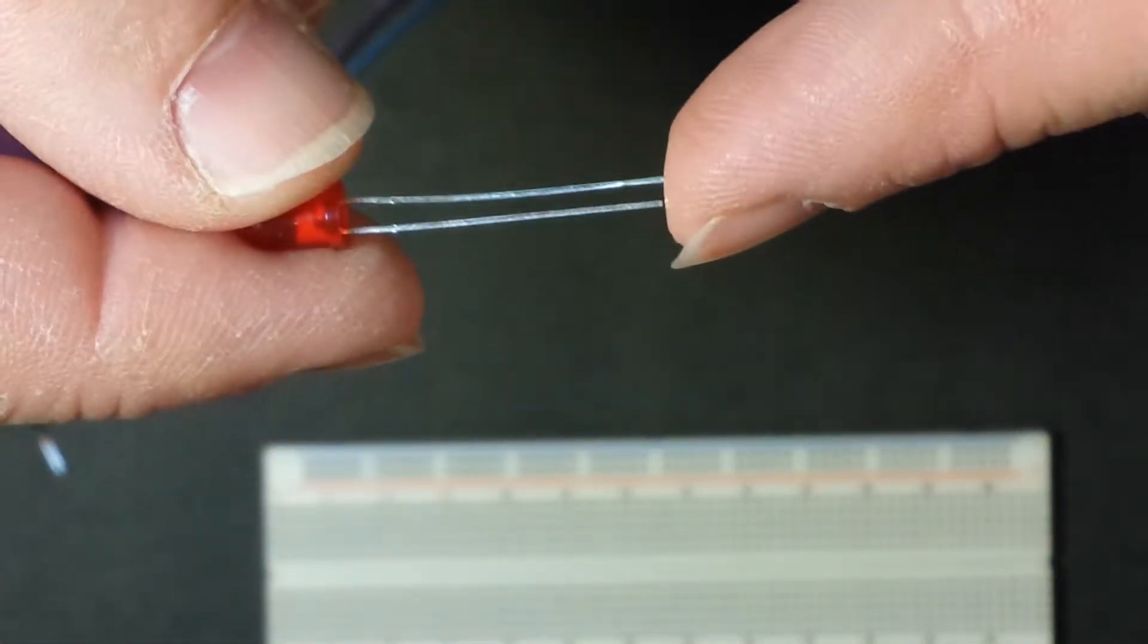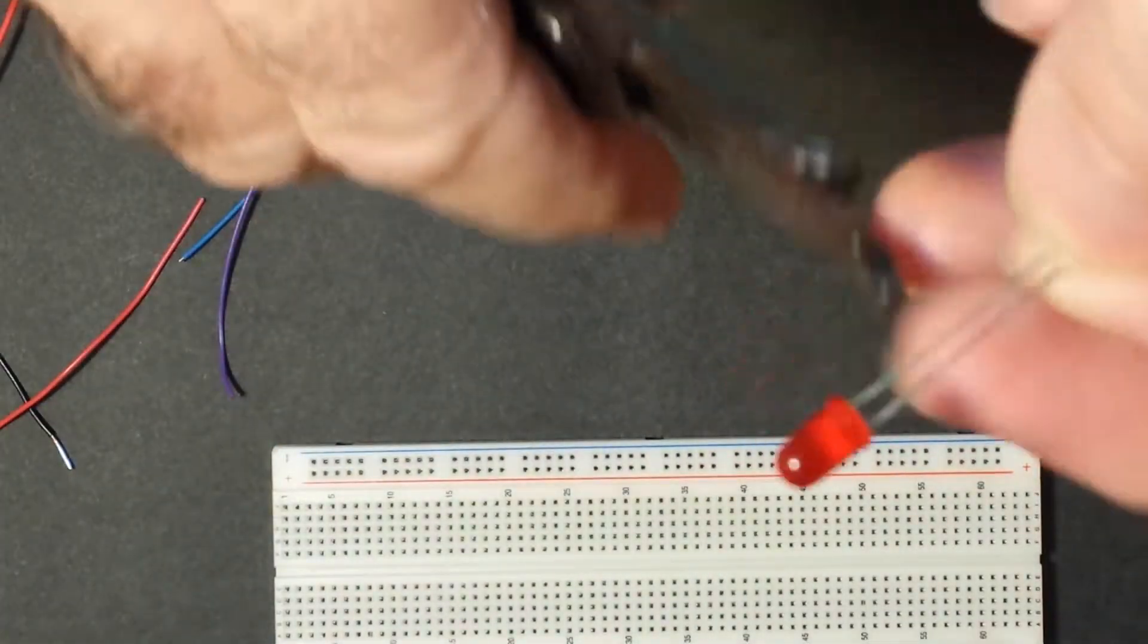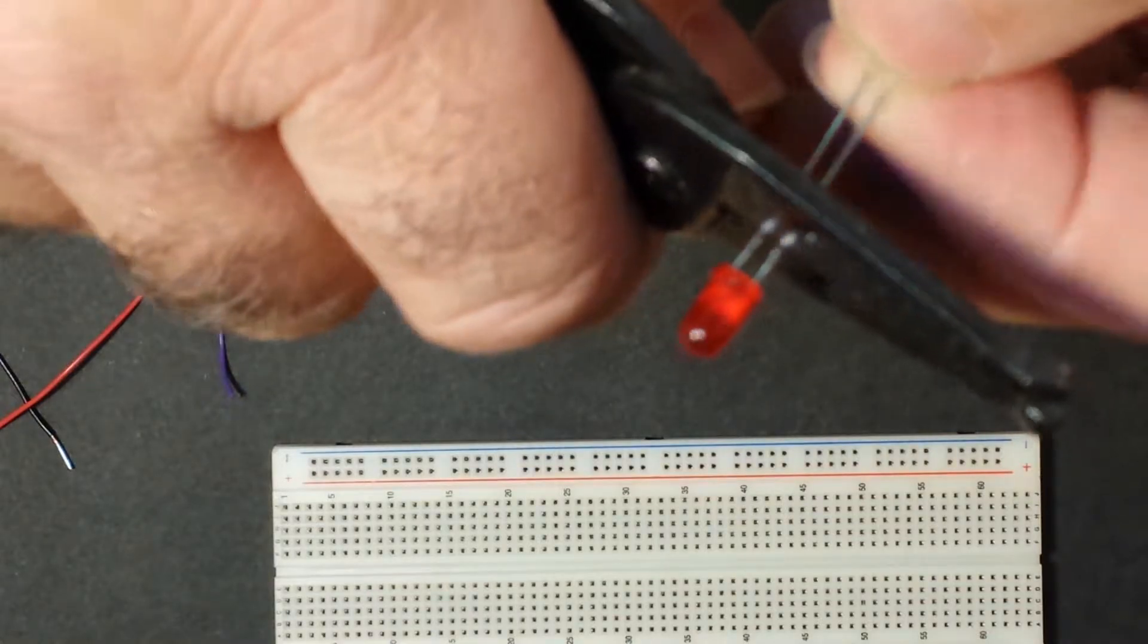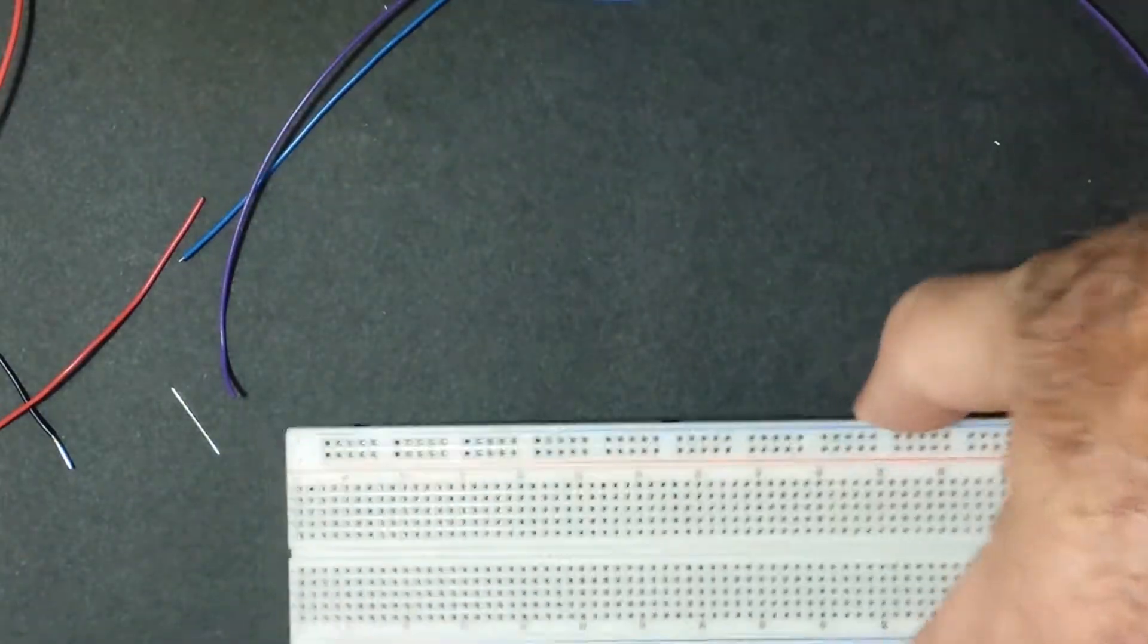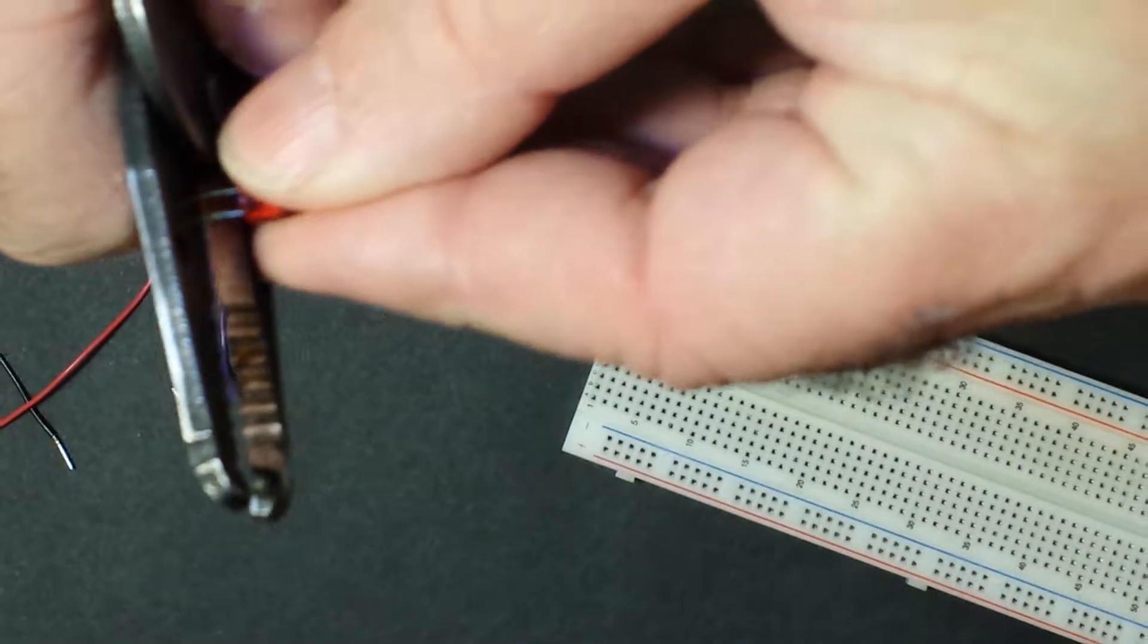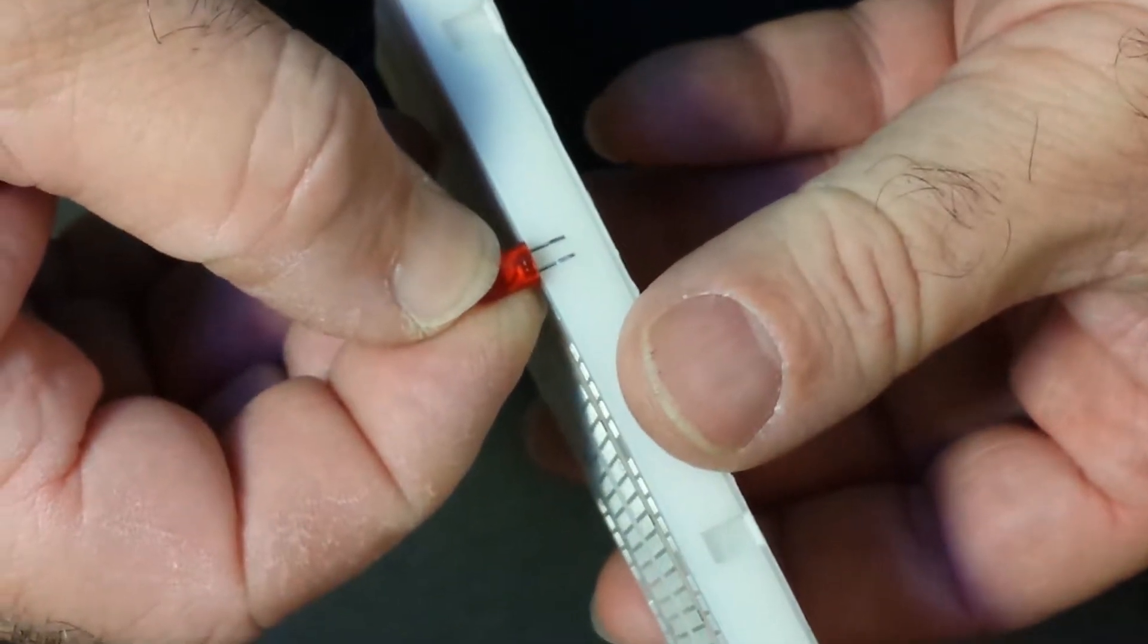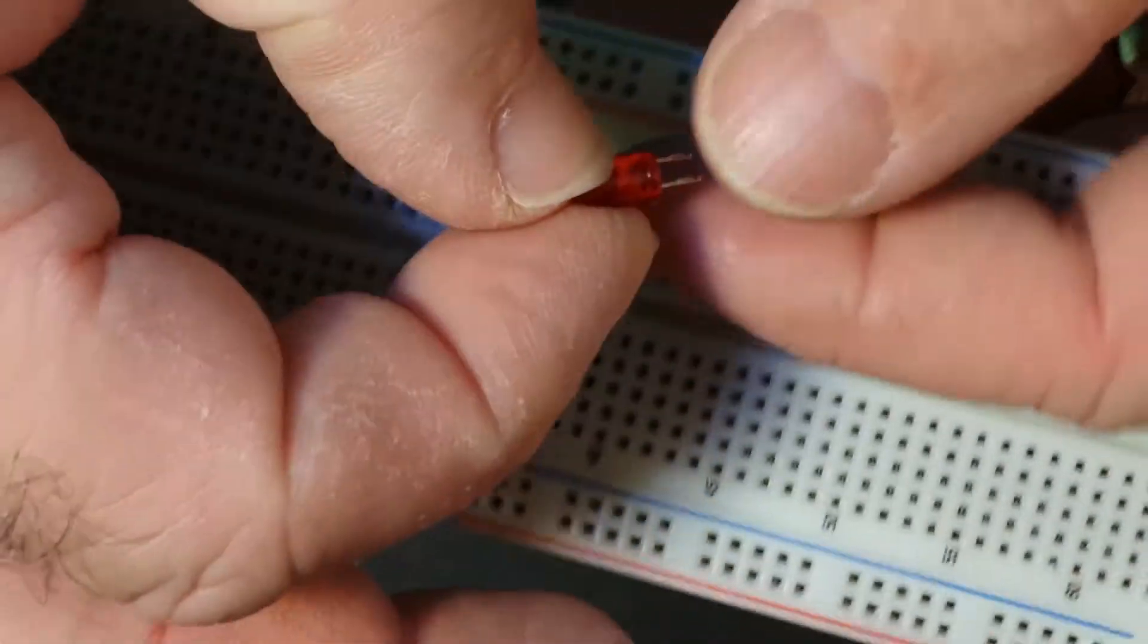And so what we're gonna do is I'm gonna cut these here about three quarters of an inch, three eighths of an inch. Why three eighths of an inch? Glad you asked. Here's your breadboard, and that's actually a little too long, so I'm gonna cut this a little bit more. There we go. So that is what you're gonna do, three eighths of an inch.